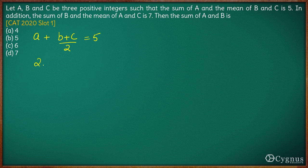This gives us an equation. Multiplying the whole equation by 2, 2a plus b plus c is equal to 10. This is the first equation.